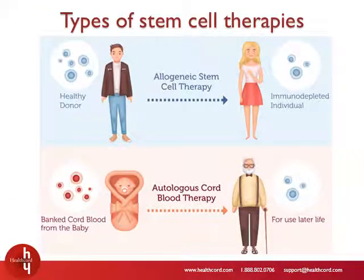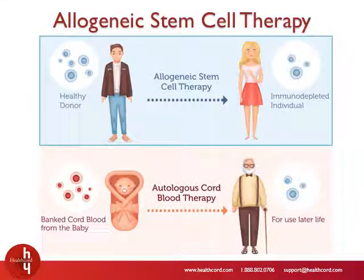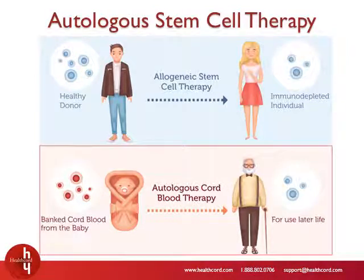Hematopoietic stem cell therapies currently in use can be broadly categorized into two groups: allogeneic stem cell therapies and autologous stem cell therapies. Allogeneic stem cell therapy involves collecting healthy stem cells from a donor and transplanting them into a patient as a treatment option. Autologous stem cell therapy involves replacing the stem cells of a patient with his or her own healthy stem cells.